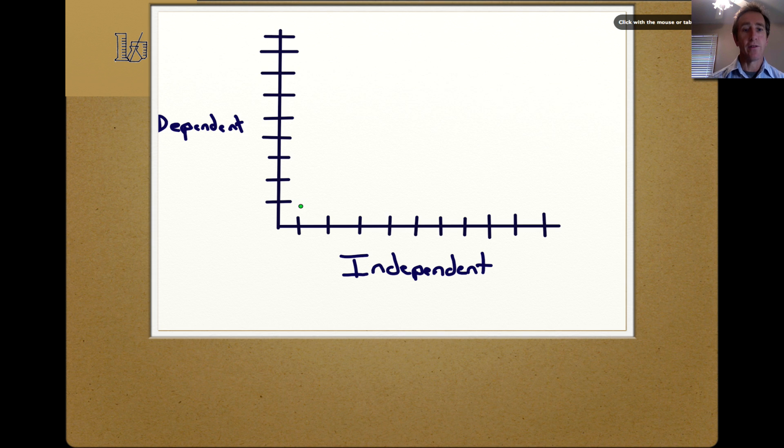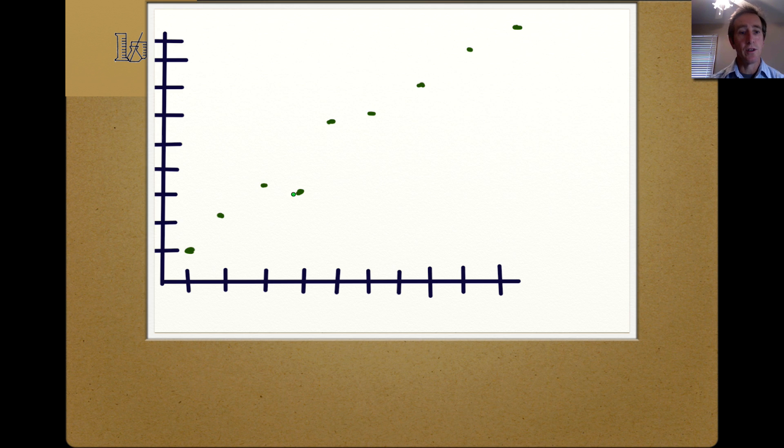We want to make sure that our graph is as large as possible. It's easier to read a larger graph and we want to use all the space that's available for plotting our points. In science we use line graphs and we don't connect the dots. Instead we make a best fit line that's as close to all the data as possible.